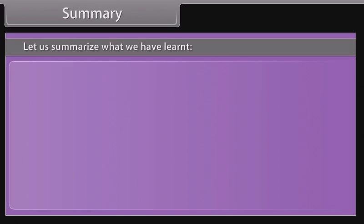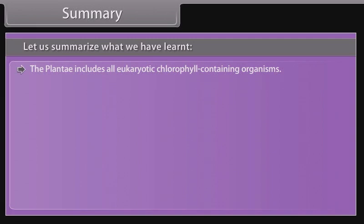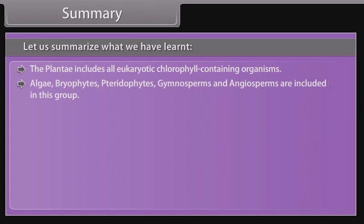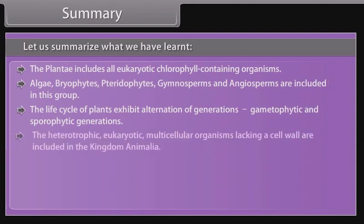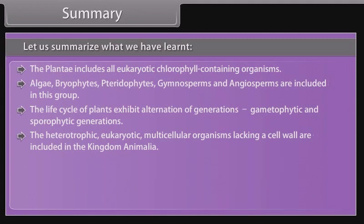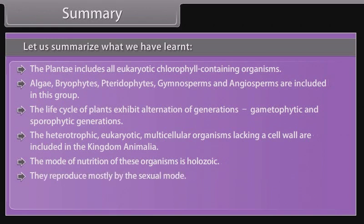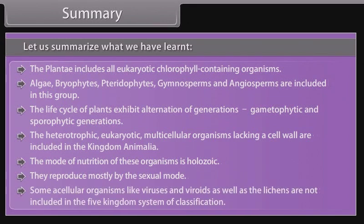Summary: Plantae includes all eukaryotic chlorophyll-containing organisms — algae, bryophytes, pteridophytes, gymnosperms, and angiosperms. The life cycle of plants exhibits alternation of generations: gametophytic and sporophytic generations. Heterotrophic eukaryotic multicellular organisms lacking a cell wall are included in kingdom Animalia; their mode of nutrition is holozoic, and they reproduce mostly by sexual mode. Acellular organisms like viruses and viroids, as well as lichens, are not included in the five-kingdom system of classification.